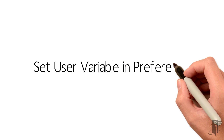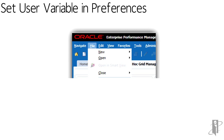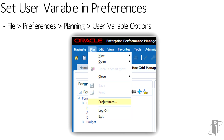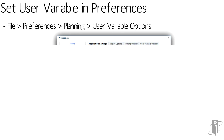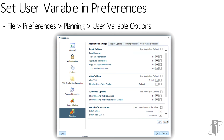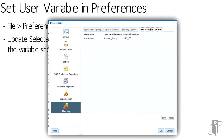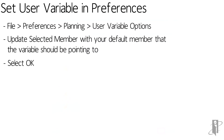Before an end user is able to open the form that has a user variable set, they will have to go into their preferences and update their default user variable. To do this, they'll go up to the top toolbar, select File, then Preferences, and select the Planning icon at the very bottom, then select the User Variable Options tab. Update the selected member with the default member that the variable should be pointing to, and then select OK. Now users are able to use the form that the user variable has been set on.